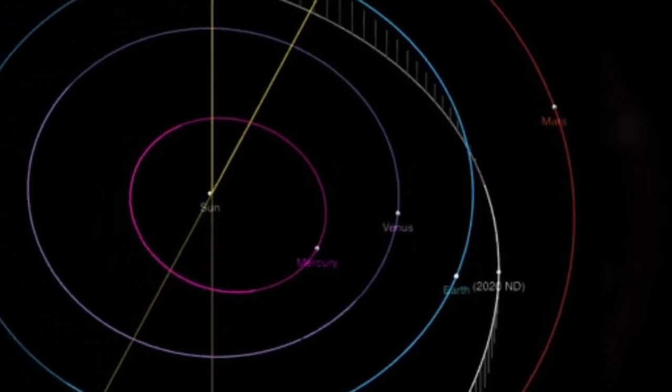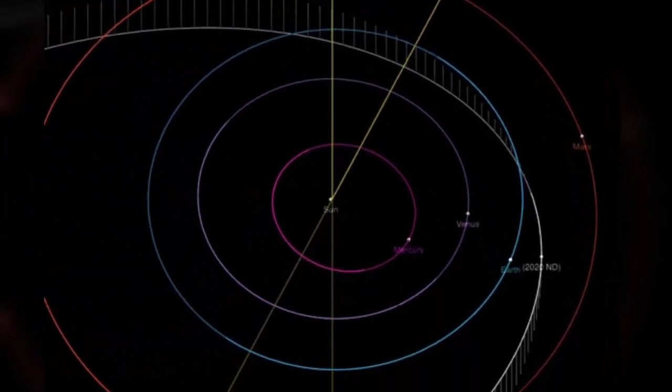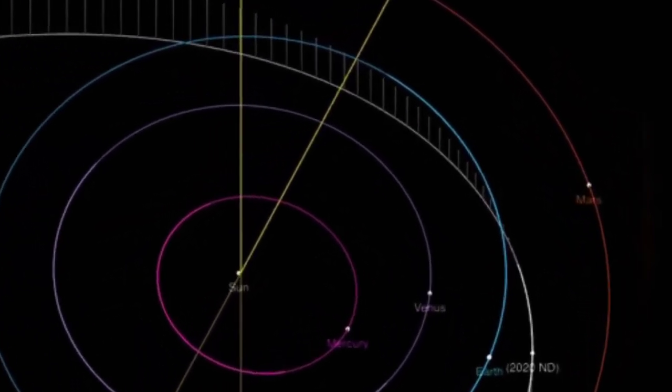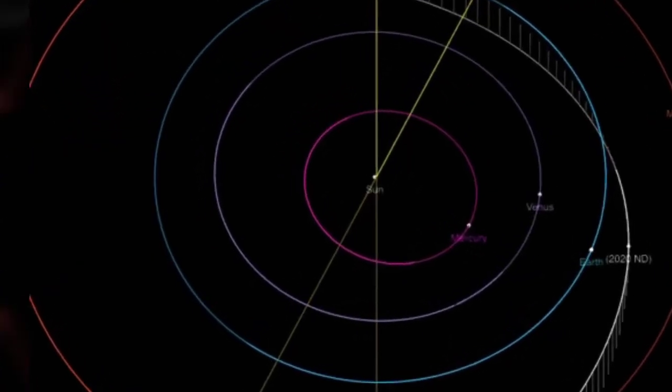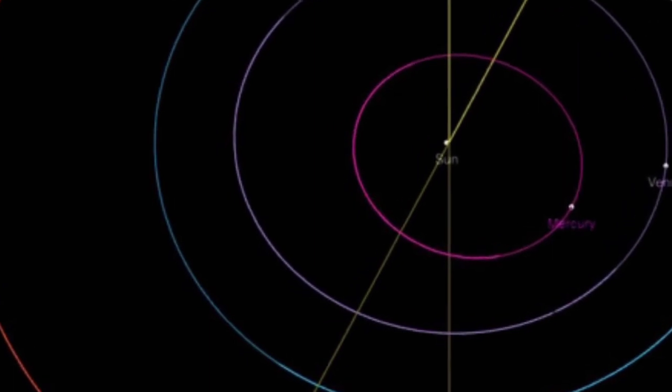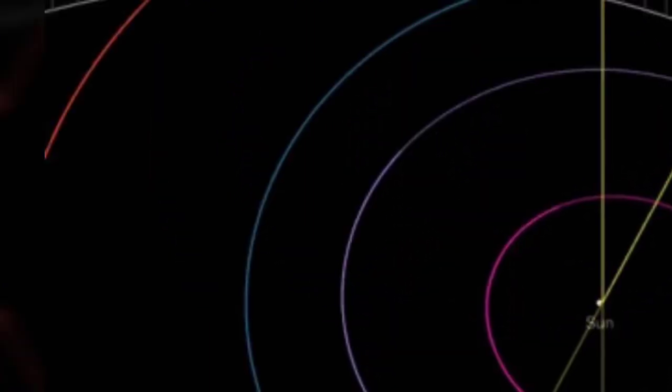However, these two asteroids don't pose a threat to our planet. NASA classifies objects like these as near-Earth objects, as these celestial objects get nudged by other planets' gravitational attraction, resulting in their proximity to our solar system.